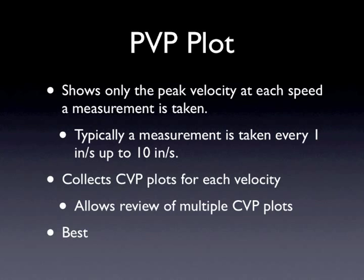When we want to look at slow-speed things going on inside the shock, the PVP plot actually gives us that data, and we can see things like seal drag, whether the shims are opening correctly, and all of those things at slower speeds. So when you're asking for a plot, the PVP plot is the best one. You can download the Roarig software if they're using a Roarig dyno, open the shock dyno plot, and get all the CVP data as well. This is what we always use — even professional teams we work with ask for this, because they know they can get all of that information.